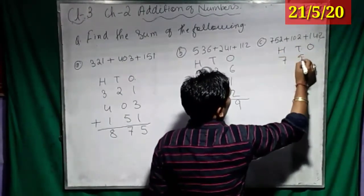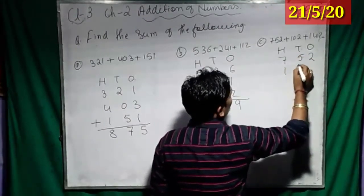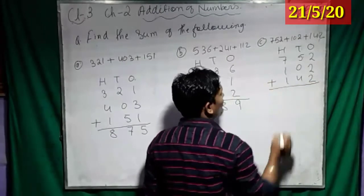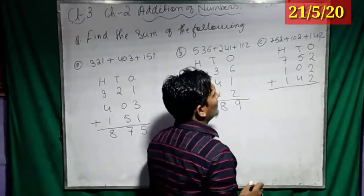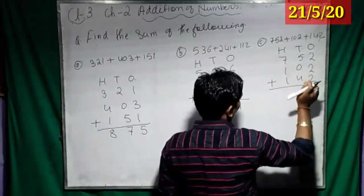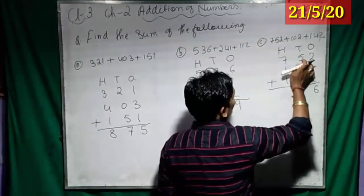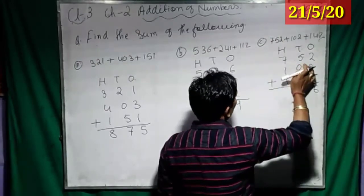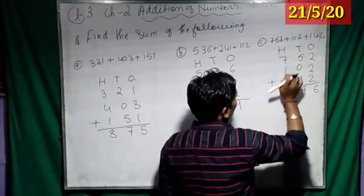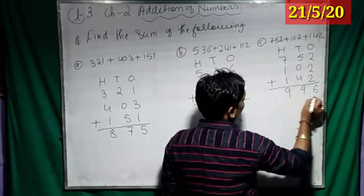Now, write the number: 752, 102, 142. Now, 2 plus 2 plus 2 is how much? 2 plus 2 is 4 and 4 plus 2 is 6. Then, 5 plus 0 is 5 and 5 plus 4 is 9. So, 7 plus 1, 8 and 8 plus 1, 9. Done.